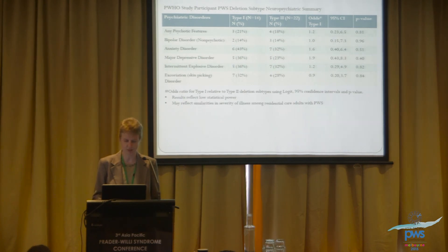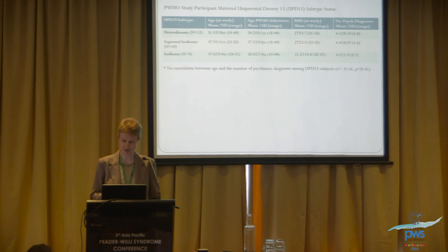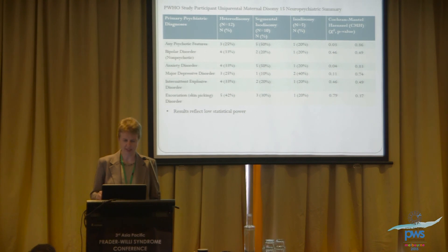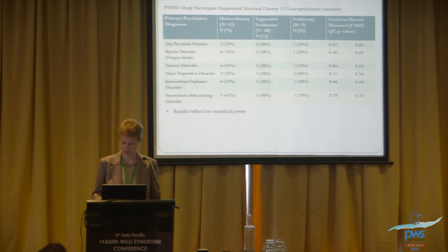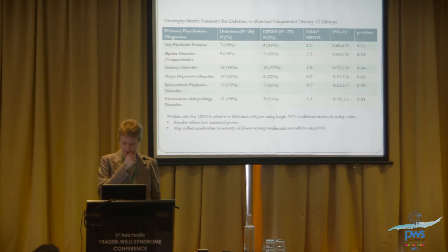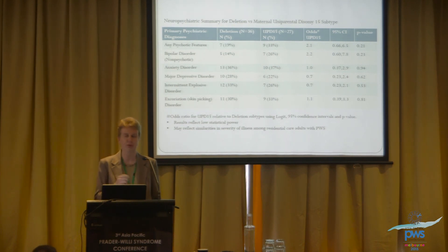Not finding statistical significance was not surprising given our low statistical power. Looking at UPD across the three subtypes, there was no correlation between age or number of psychiatric diagnoses, and no statistically significant difference between the three UPD categories — again likely due to low statistical power. Comparing deletion versus UPD also showed no statistically significant difference, likely reflecting both low power and the similarities in illness severity among residential care populations, since individuals with more significant psychiatric difficulties are more likely to be referred for residential care.